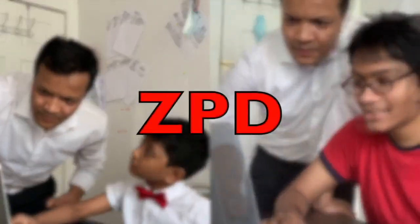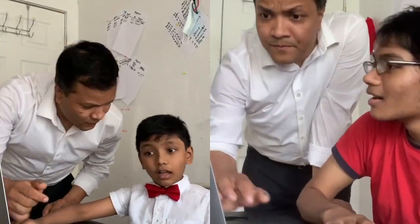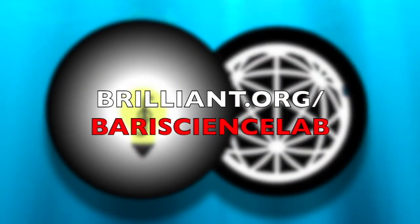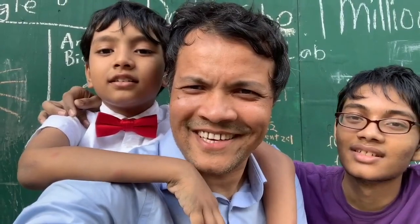Barry Science Lab and Brilliant is your MKO and will give you the scaffolding to expand your ZPD until you become the next Sir Isaac Newton or Albert Einstein. Visit Brilliant.org slash Barry Science Lab today. The first 50 of you to use that link will get a 20% discount on the Brilliant annual subscription. Don't forget that you too can become the next Einstein. So let's fall in love with math and science.